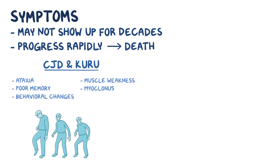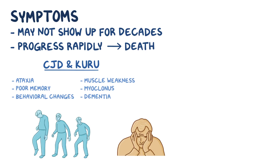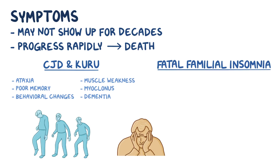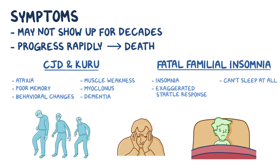Hiccups are an example of myoclonus. Finally, there's dementia, where a person loses their mental functions like memory, decision making, and reasoning. In fatal familial insomnia, people present with early symptoms of insomnia and an exaggerated startle response. Eventually they cannot sleep at all and can experience hallucinations. Like the other prion diseases, they eventually develop dementia, and it eventually progresses to death.